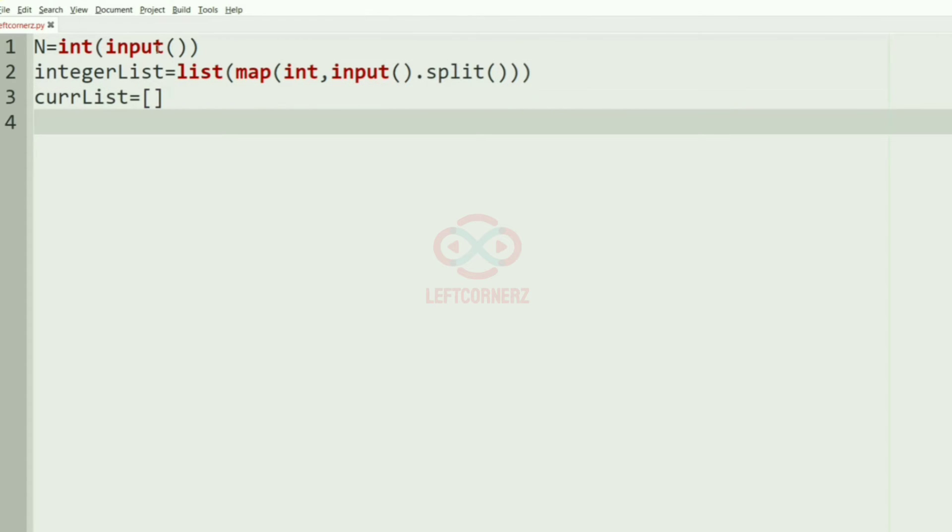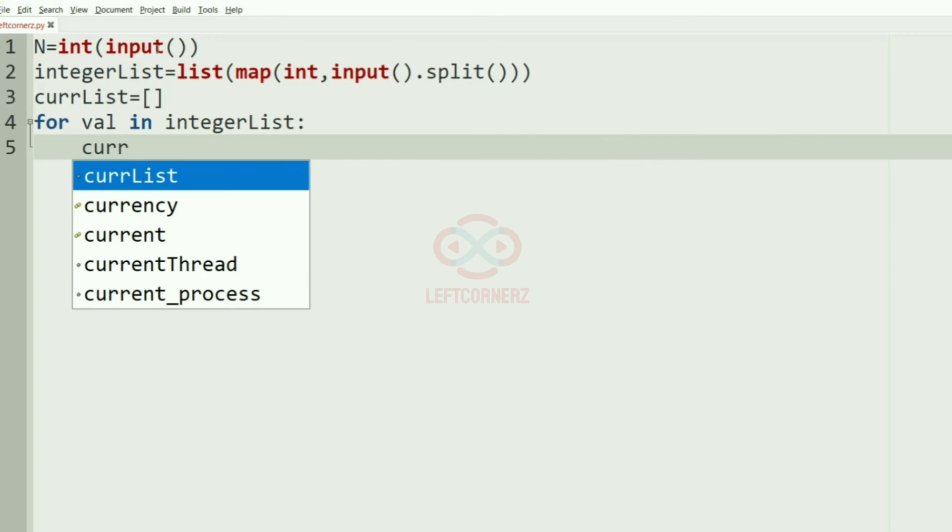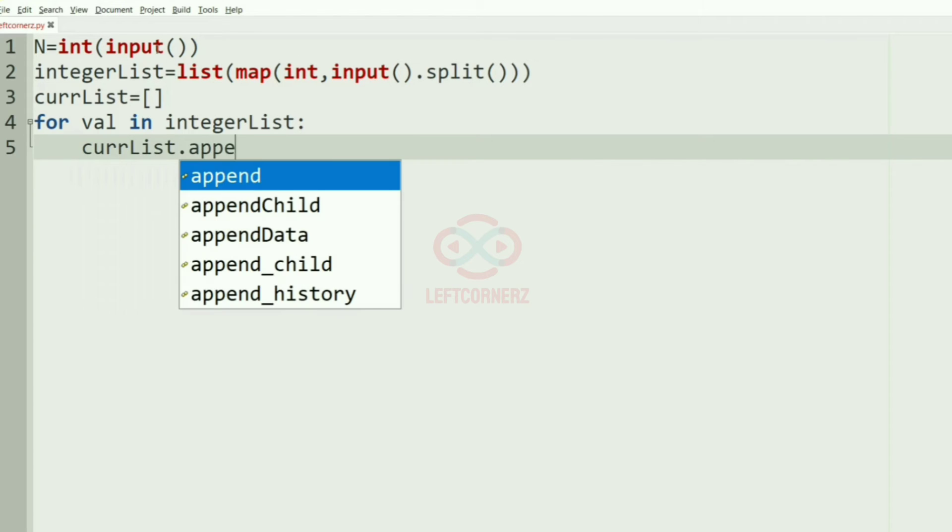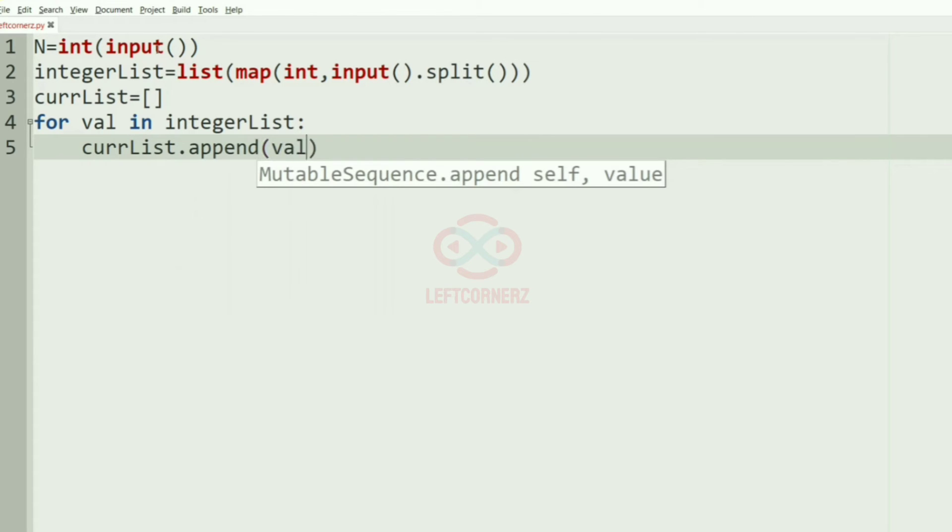And then we'll have empty list called current list. And then we'll loop the integer list with the value.